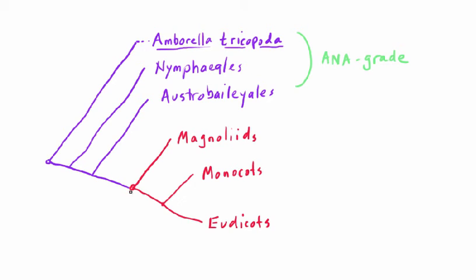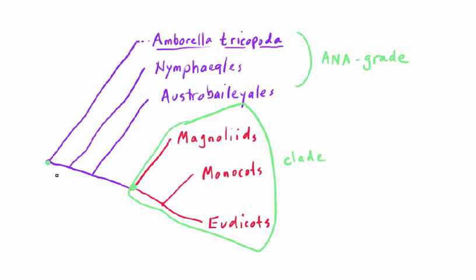A clade is defined by a common ancestor and must include all evolutionary descendants from that common ancestor. In the case of Amborella, Nymphaeales, and Austrobaileyales, their common ancestor is way back — which is really the common ancestor to all angiosperms. So it would not work to name a grouping that contains these three to the exclusion of the mesangiosperms, because such a grouping would fail the second criterion of being a clade: you have to include all evolutionary descendants from the common ancestor for it to be monophyletic.